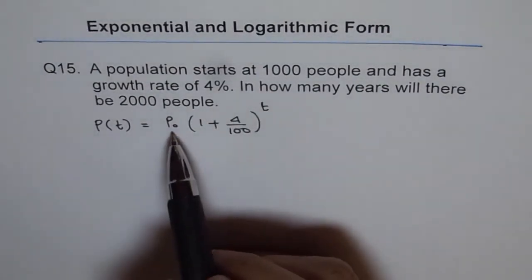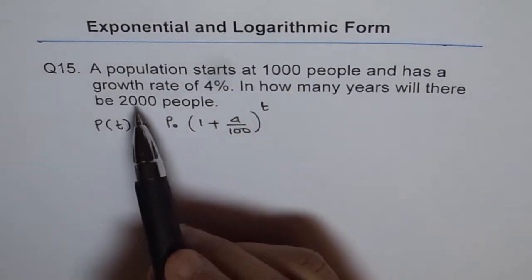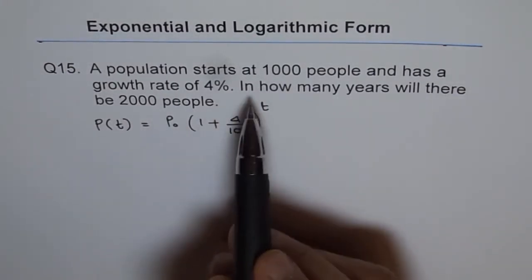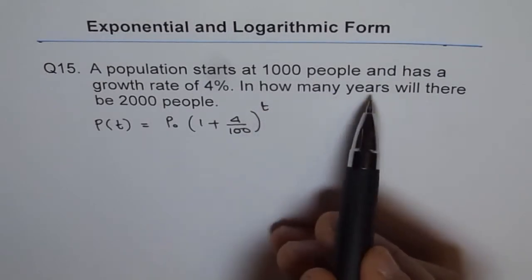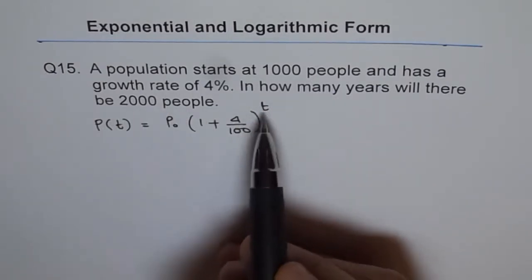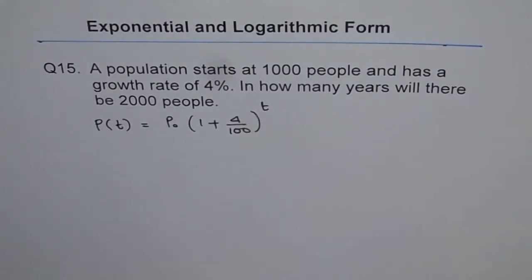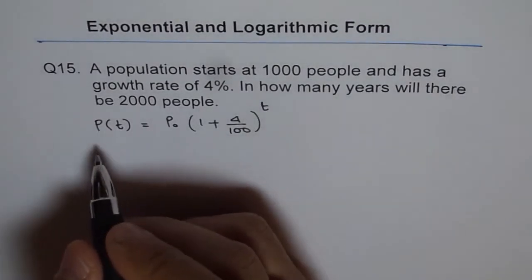Here we know initial population is 1000, final we want as 2000, and the variable t, in how many years will there be 2000, is to be determined. So we can solve this equation and get our answer. Let's plug it in.